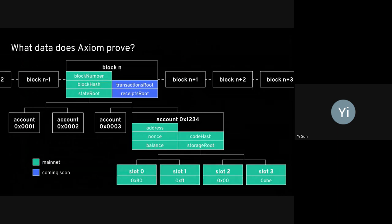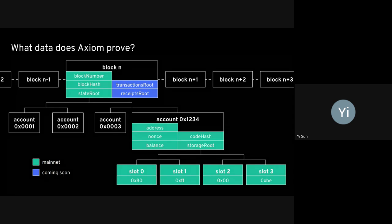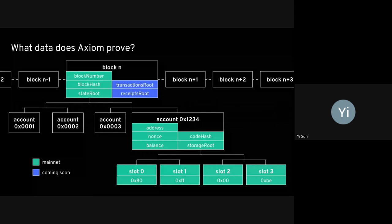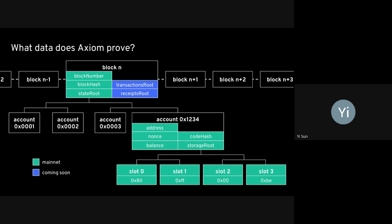Within every block header there are commitments to three Merkle Patricia Tries: the state root (committing to the account trie), the transactions root, and the receipts root. Within each account there is a storage root committing to the storage trie. Each of these tries is a degree-16 trie with a specific RLP serialization structure. To prove the value of a storage slot — for example slot zero in account 0x1234 — we prove the key-value pair lies in the storage trie with the correct storage root, then prove that storage root lies in the account, and that the account lies in the state trie.